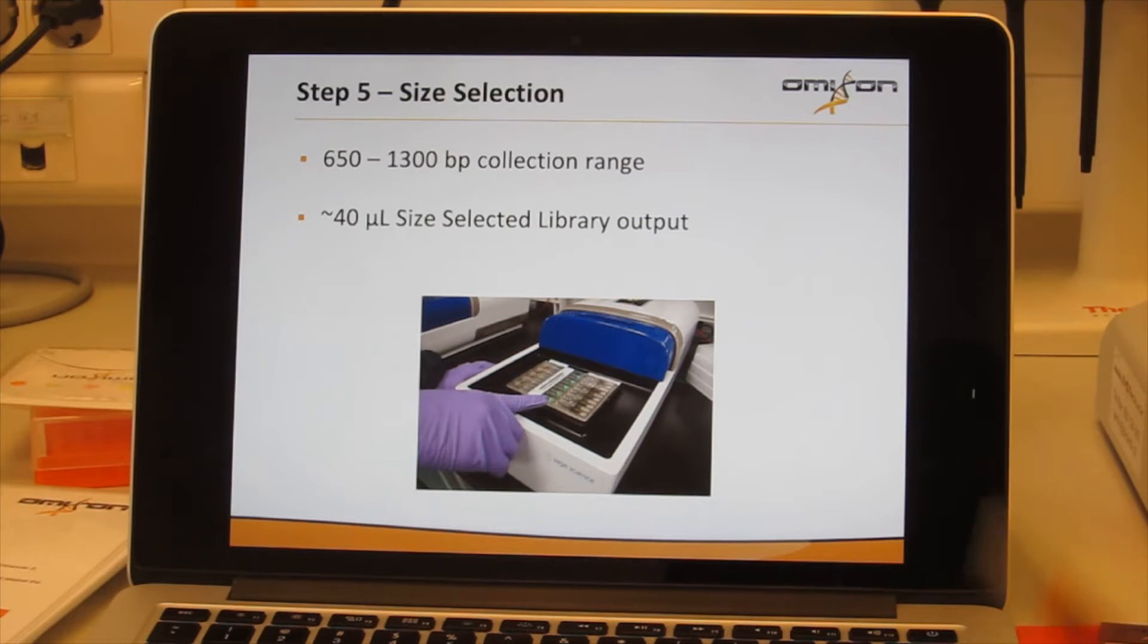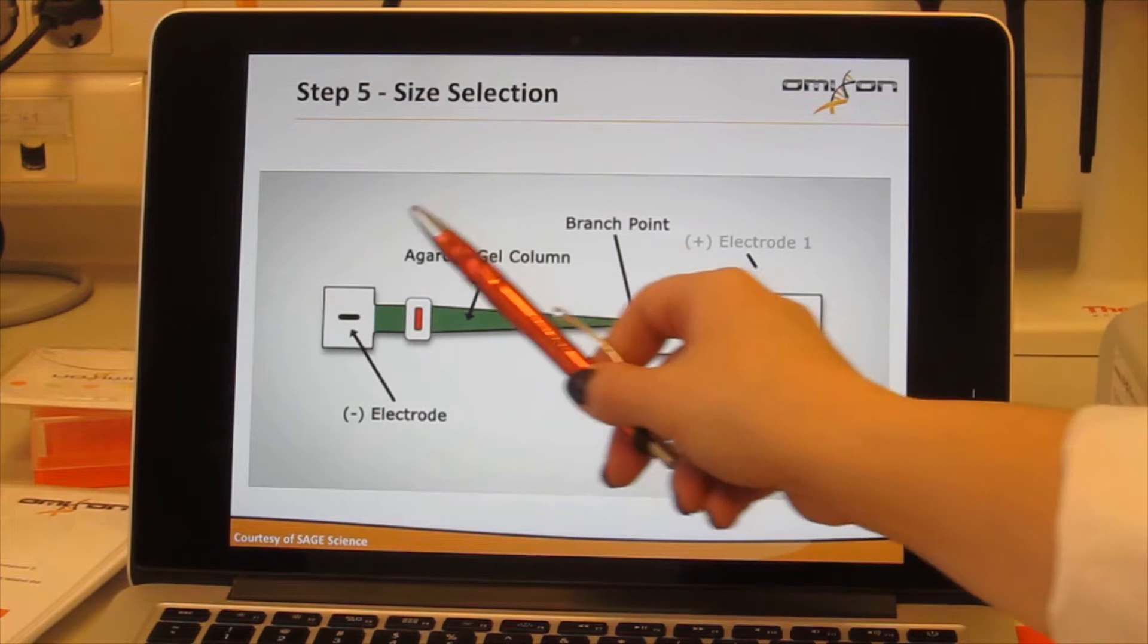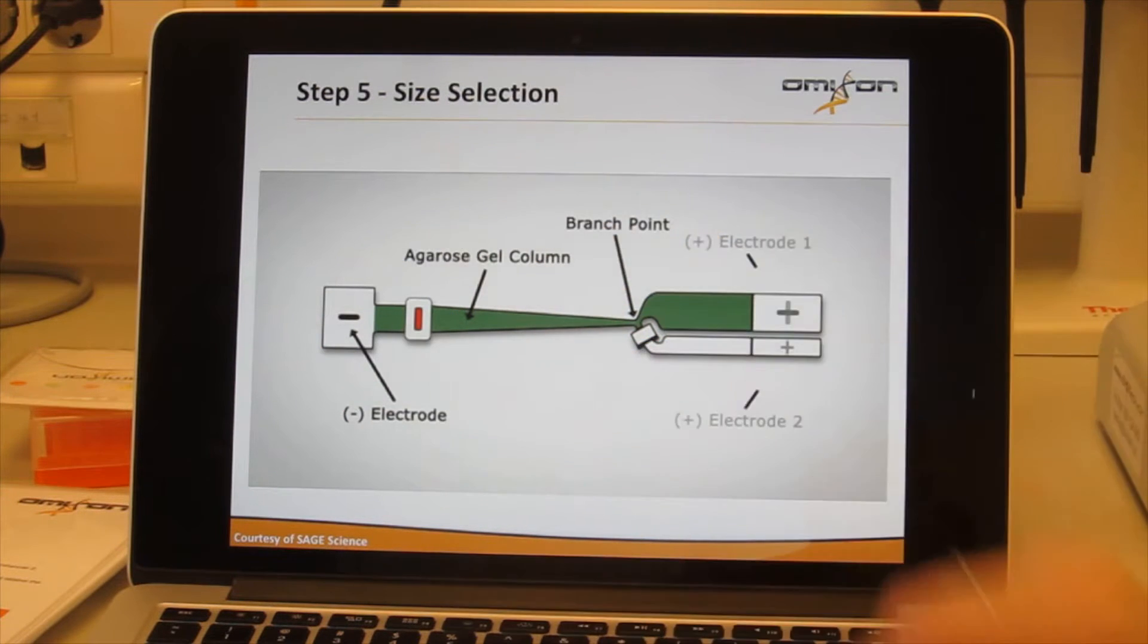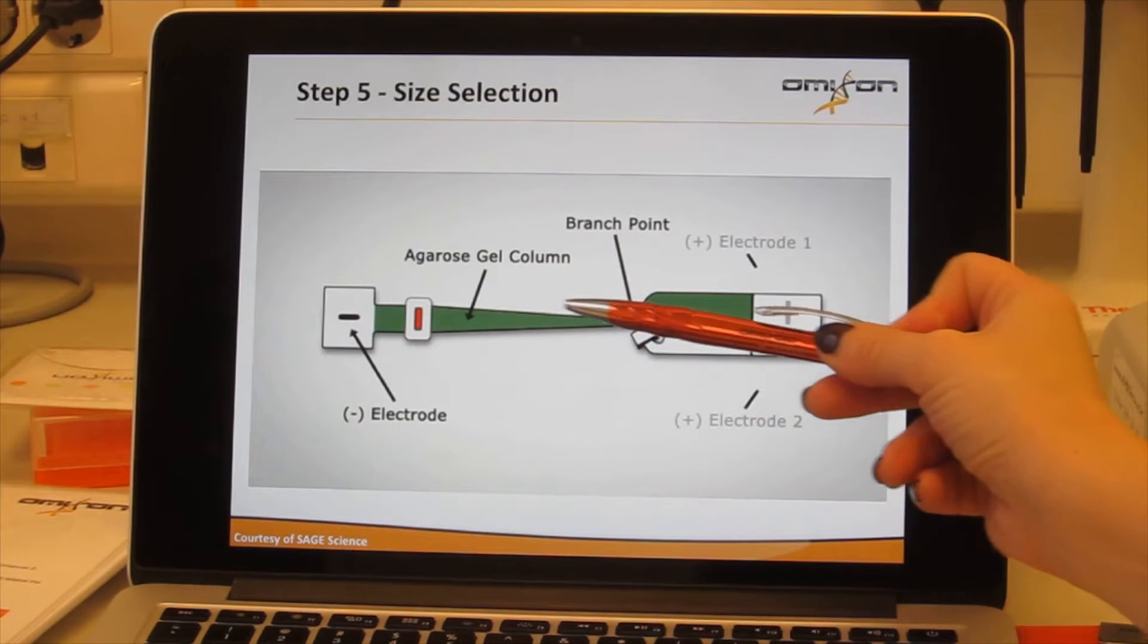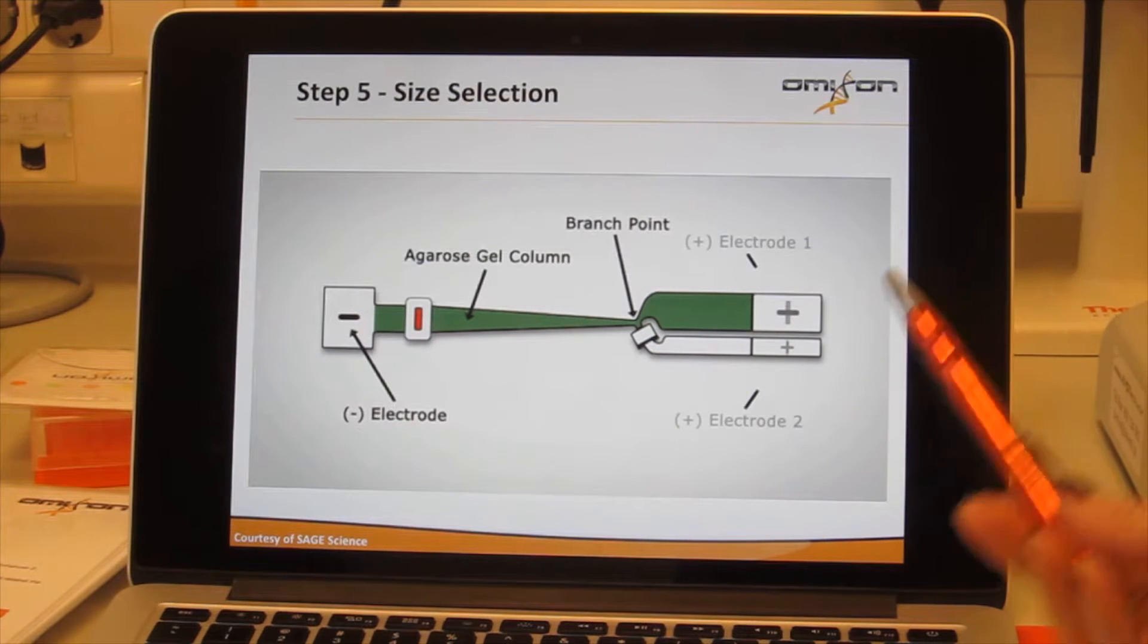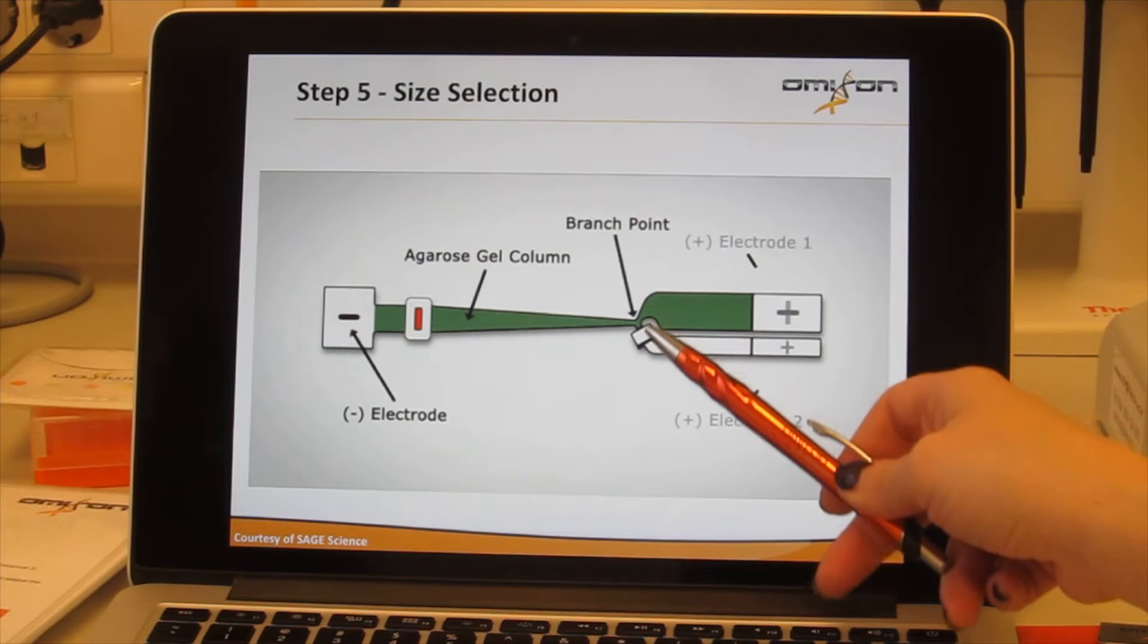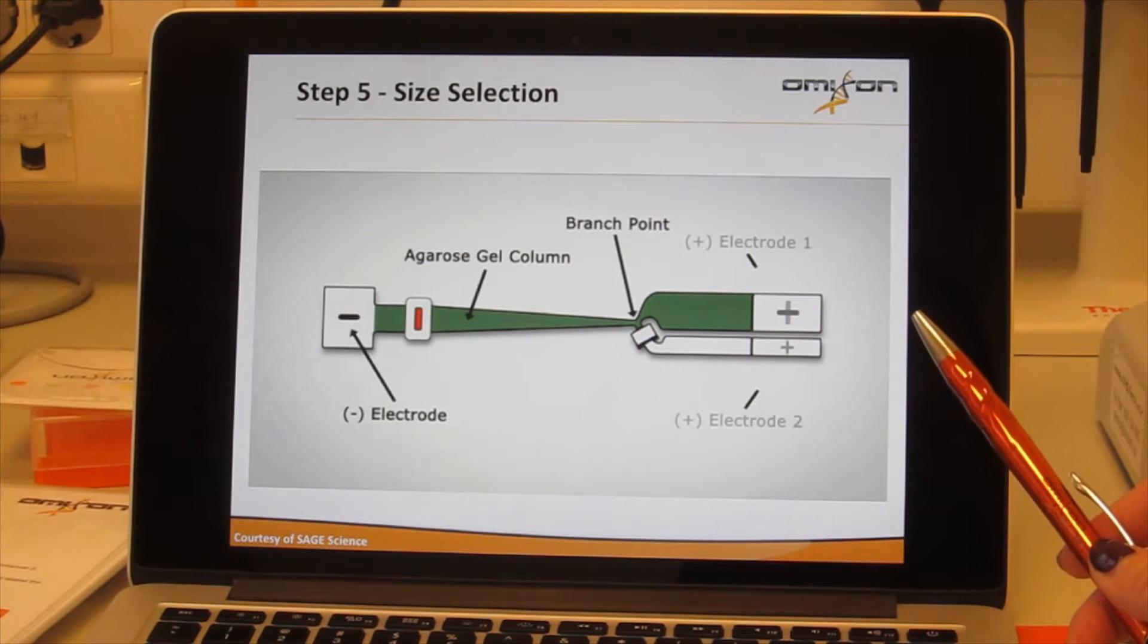So how does this machine work? What is the principle of this method? Each lane looks exactly like what you see here in the picture. It's one long column. The green part is filled with agarose gel—it's a standard agarose gel. There is a branch point that breaks into two approximately halfway down the middle of the column.